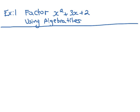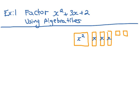So our first example. Factor x squared plus 3x plus 2 using algebra tiles. So let's first talk about these algebra tiles. We have 1 x squared. We have 3 rectangles because we have 3x's. And we have 2 little squares, referring to as 1's.